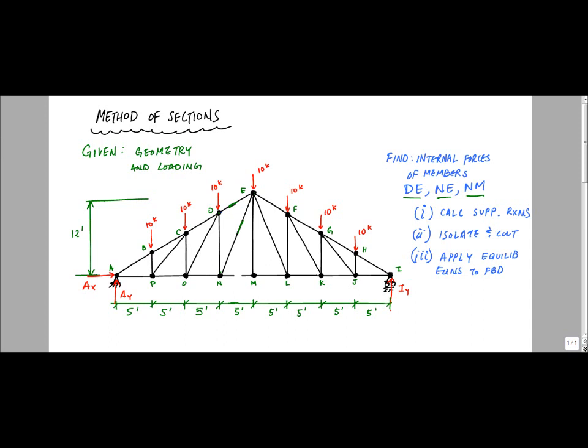Then you're going to isolate and cut, and it's important to cut through 3 elements. The reason you have to cut through 3 elements is because when you take that free body diagram, you're only going to have 3 equations available to you in 2D. A lot of times people are tempted to go joint by joint, but that's just going to take forever. Unless it's asking you for every force in every member, there's no point in doing method of joints.